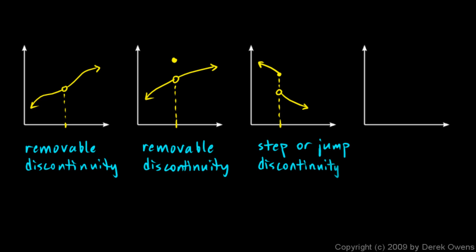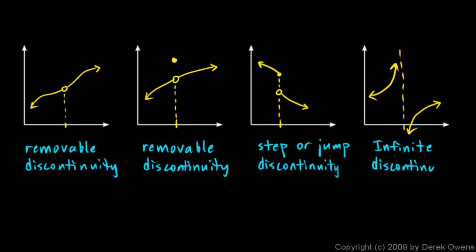One more type: let's think about the case of a vertical asymptote. Imagine a function that's zooming way up on one side and way down on the other. The point here is the vertical asymptote — this is called an infinite discontinuity. The value of the function heads toward infinity, either positive or negative, and at least one of the one-sided limits is infinite.